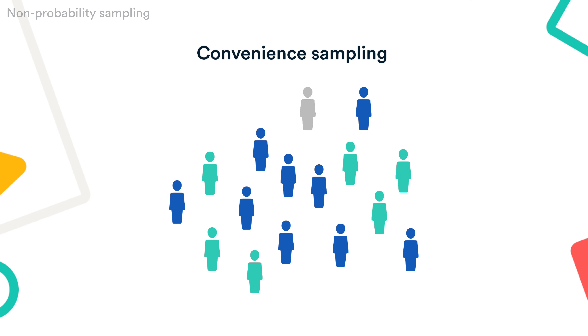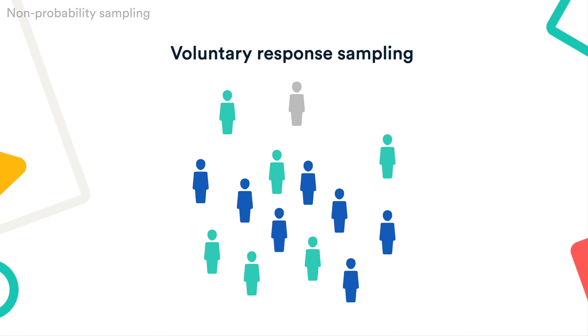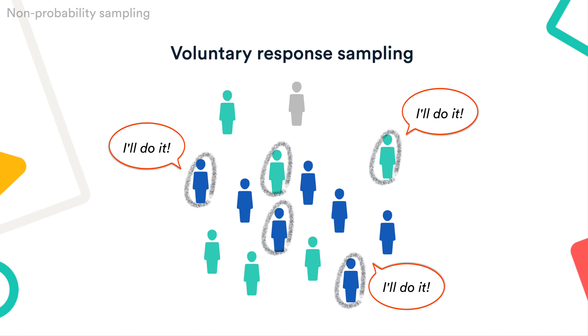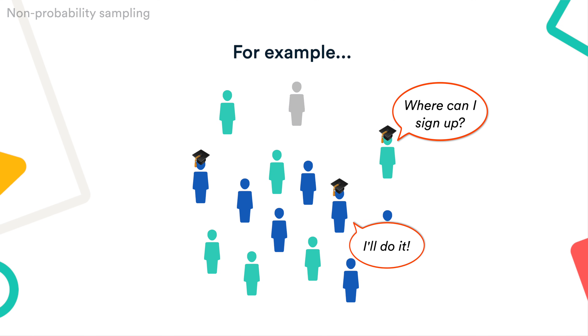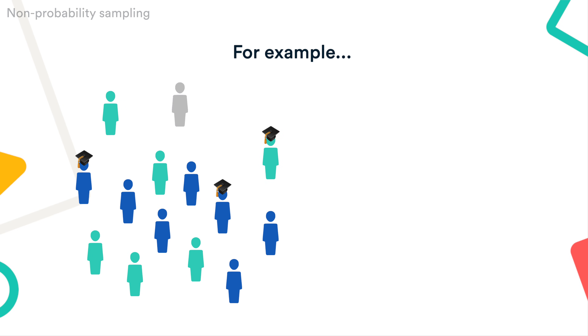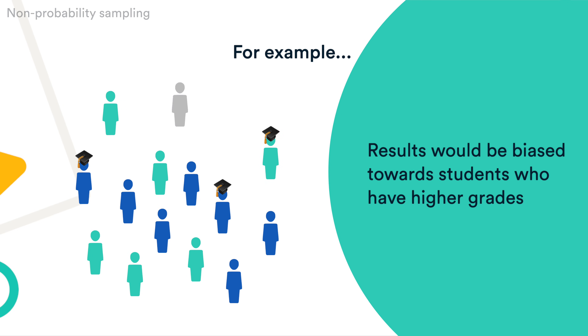Non-probability samples are much easier to achieve, but they have more risk of bias. If you choose a sample based on the most convenient and accessible members of the population, or if you rely on volunteers for a study, your sample might differ in systematic ways from the population as a whole. For example, high academic achievers might be more likely to volunteer to take part in an online teaching study than students in general. In this case, your results would be biased towards students who already tend to have higher grades.